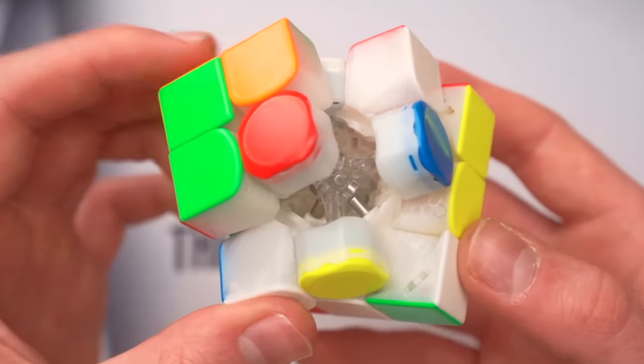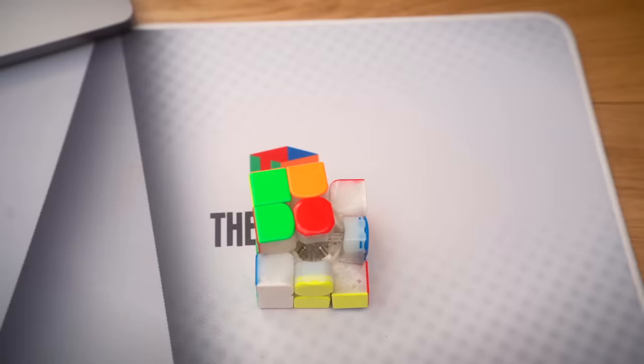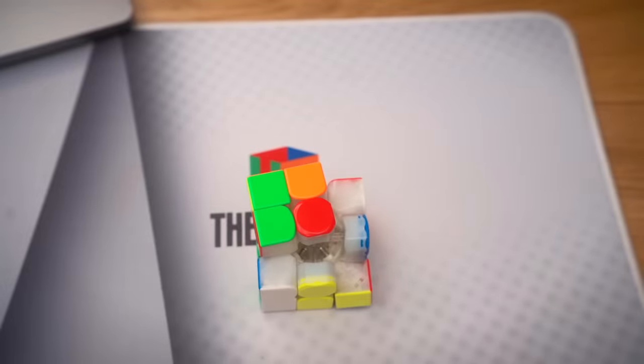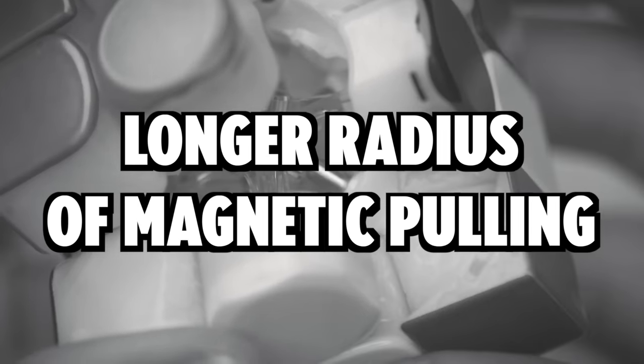You can see that when you turn, there is a long magnetic pull between the core and the corner pieces. Now, comparing this to the normal edge corner magnets, which only pull when they're in direct contact, core corner magnets have a longer radius of magnetic pulling. Is that correct, scientific language?